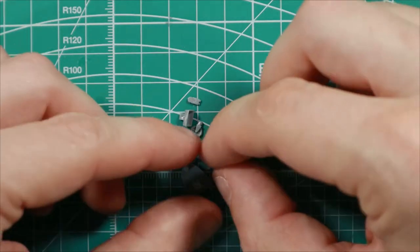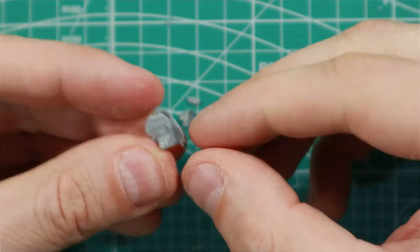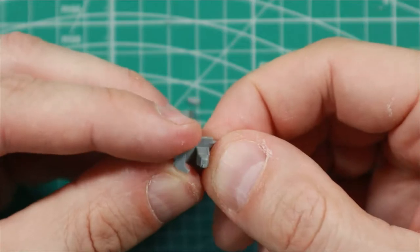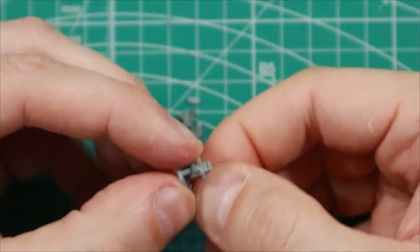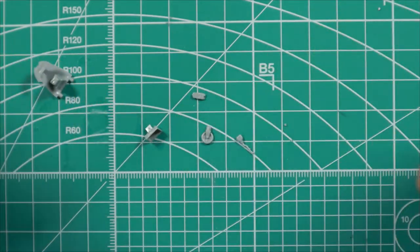So now we need to test fit all the parts together. This is the cockpit instrument panel that goes right here with the front wall. And then we have the seat, the trim wheel, the joystick, and I think this is the radio.